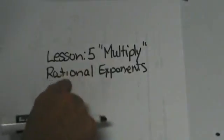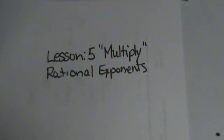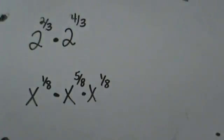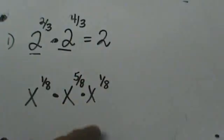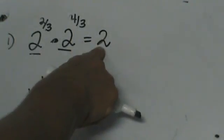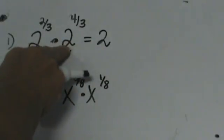Welcome back to lesson 5. We are looking at multiplying rational exponents. Remember, a rational exponent is just a fraction in the exponent. So let's look at how to multiply these. We are going to start off with problem 1: 2 to the 2/3 power times 2 to the 4/3 power. We are multiplying like bases — our bases are both 2, so our base will not change; it will remain 2. One of the big mistakes students make is they want to multiply those together to get 4, and we are not going to. We are going to keep the base.